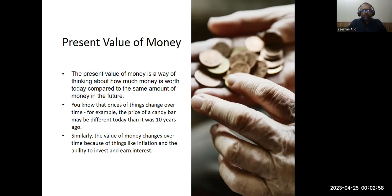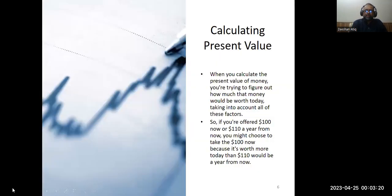You know that the prices of things change over time. For example, the price of a candy bar may be different today than it was 10 years ago. Everything — electricity, telecom, communications — has gotten more expensive over time. Similarly, the value of money changes over time because of inflation and the ability to invest and earn interest.